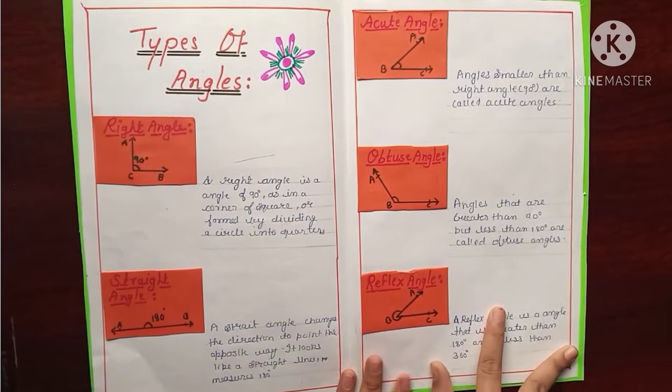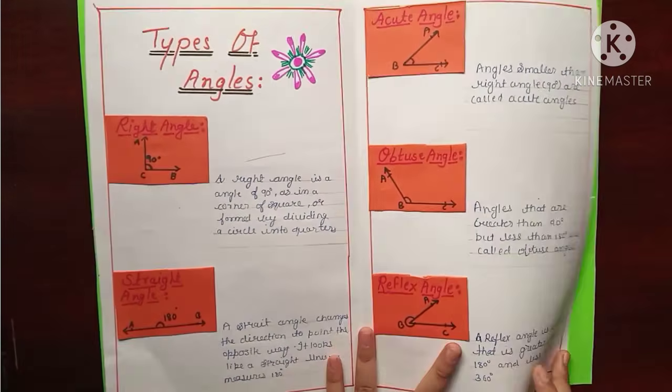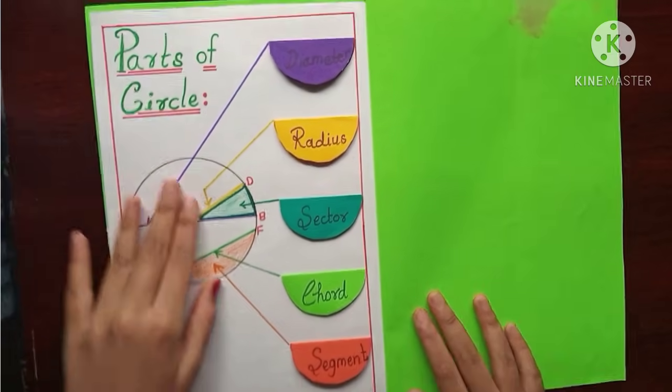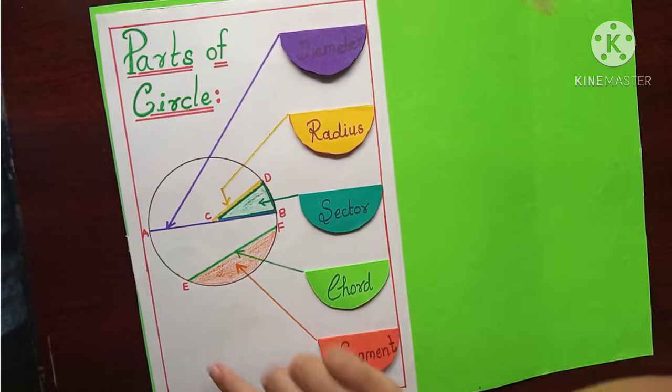Now let's move towards next. And here are the parts of circle. Here you can see.